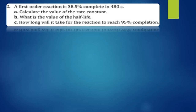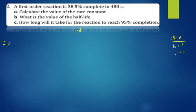Part (a) says: calculate the value of the rate constant. Let's set up the data. We want the rate constant k. We have been given time which is 48 seconds, and this is a first-order reaction. We need to understand what 38.5 percent means. Since it involves percent, 100 will be our initial concentration — that's where it starts.